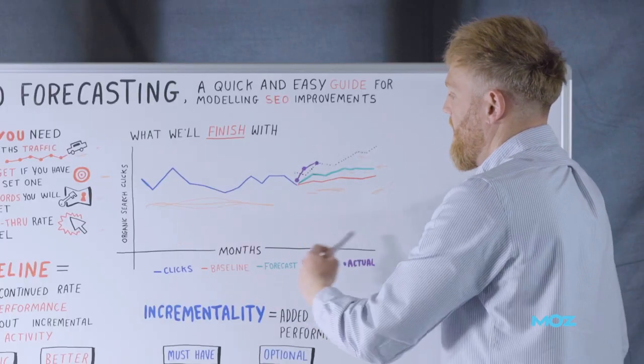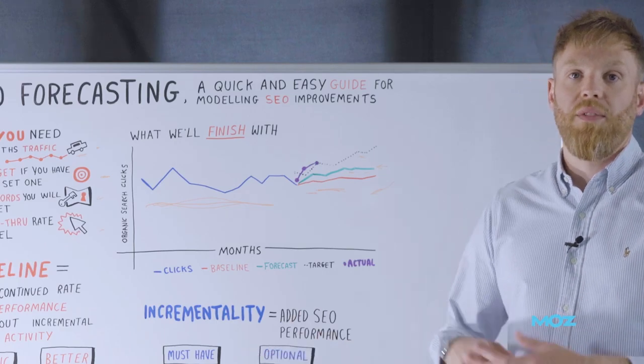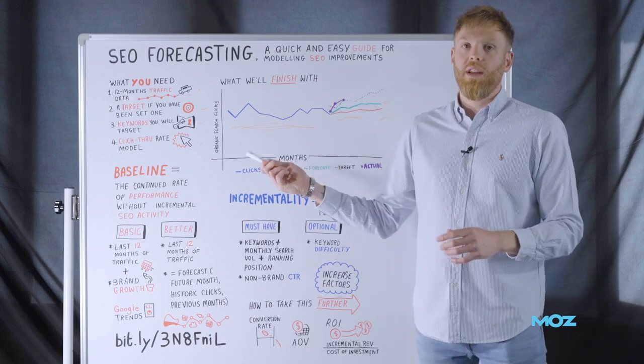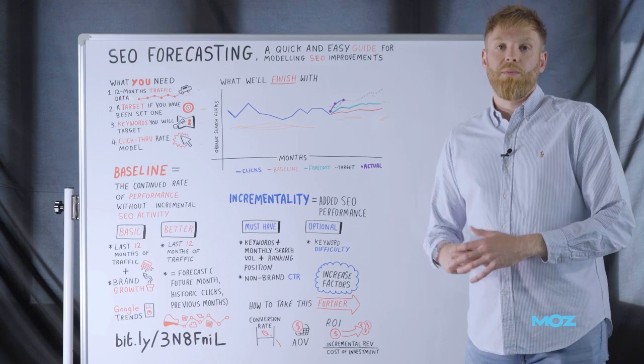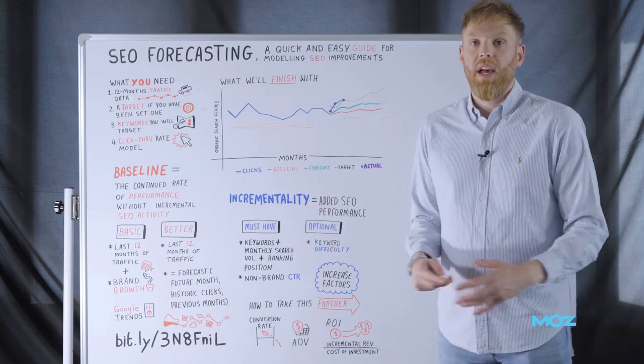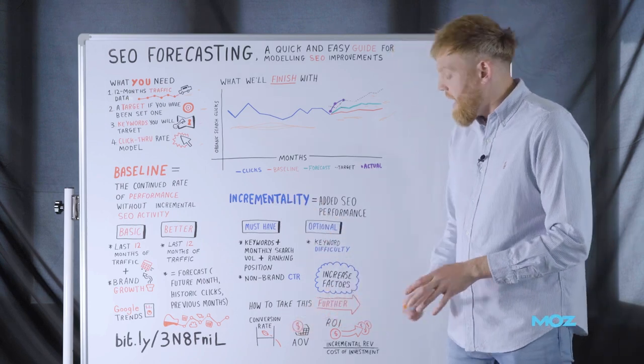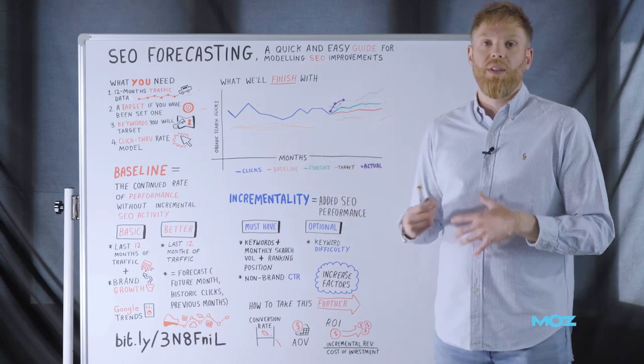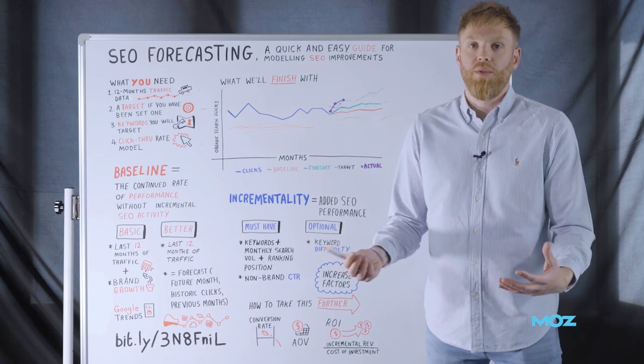So now that we've got this graph here, which models clicks in terms of how we're driving positive performance over the next 12 months, there are further things that we can do to bring in revenue metrics, which makes this a much more attractive proposition for finance teams and those in charge of your budgets. So if you bring in conversion rate and average order value data, you can apply that on top of the incremental clicks to understand how much more revenue you're going to be driving from your business or your client organisation.